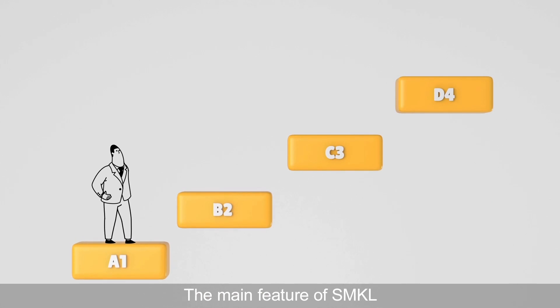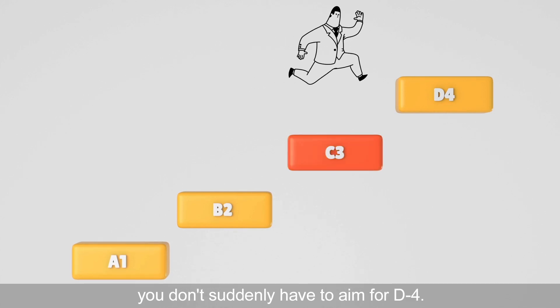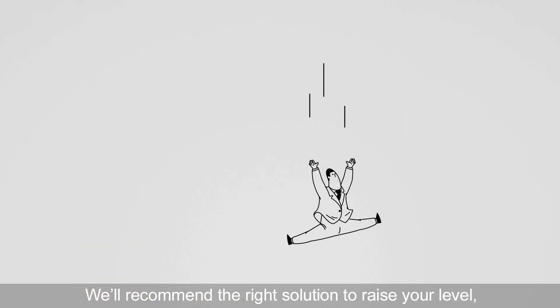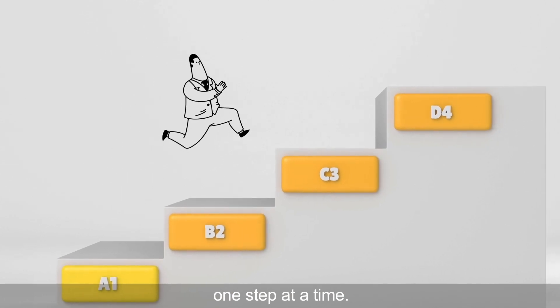The main feature of SMKL is that it's built on many small steps. So, even if your plant is A1, you don't suddenly have to aim for D4. We'll recommend the right solution to raise your level, one step at a time.